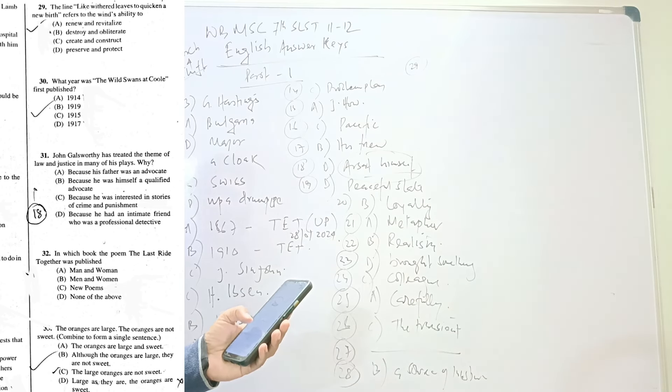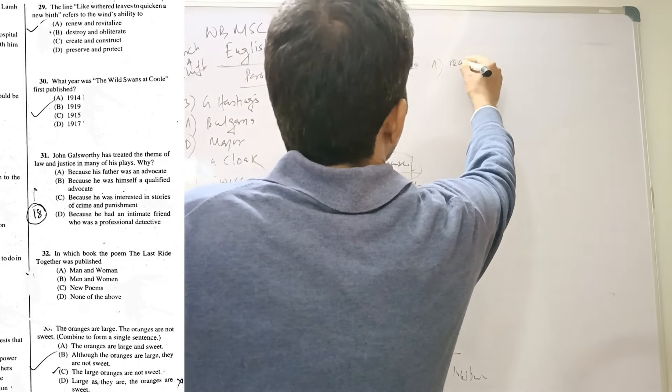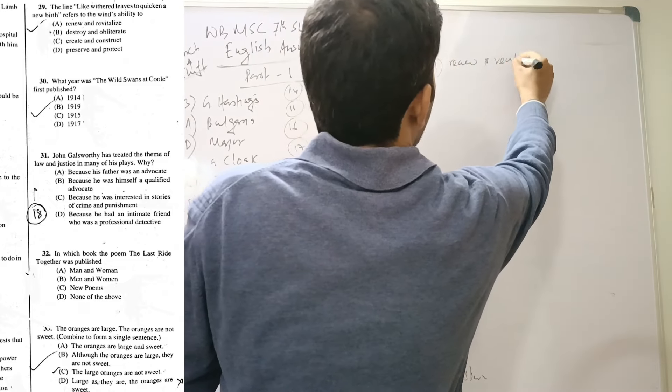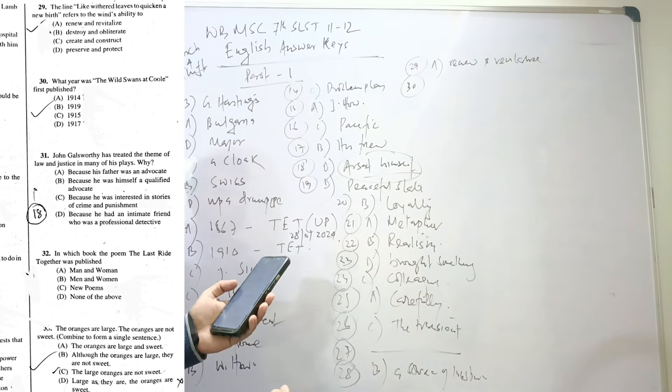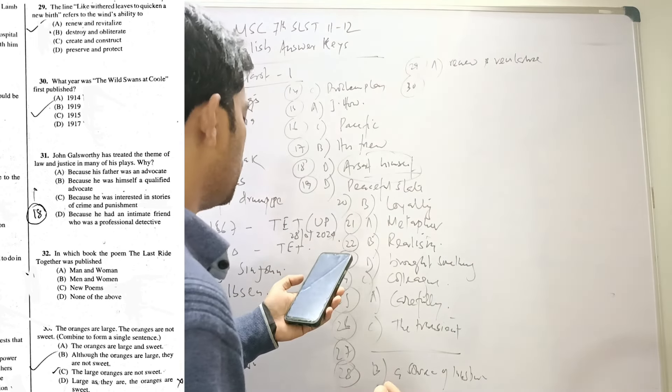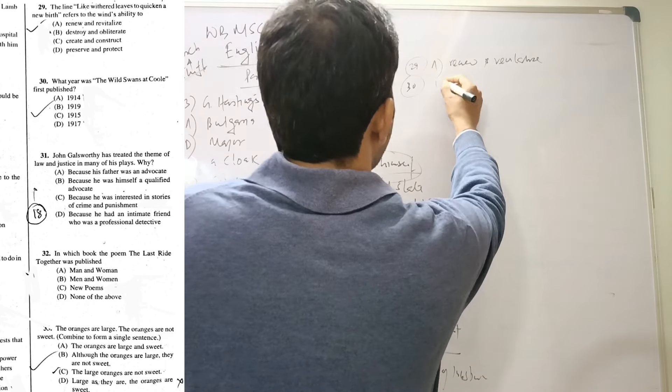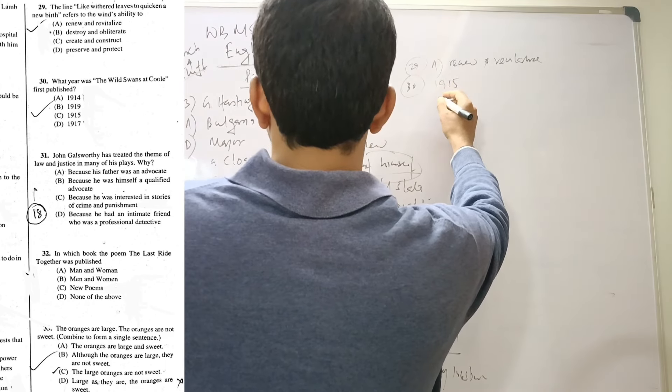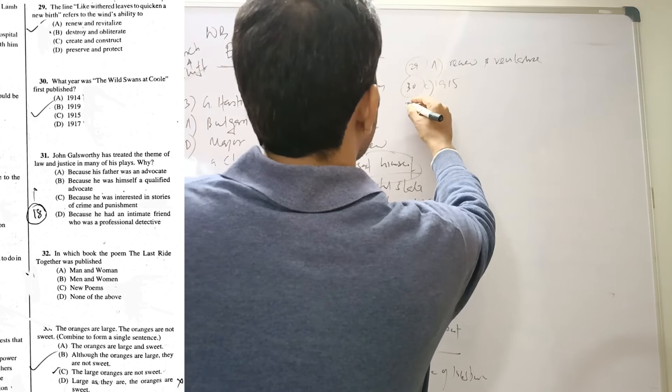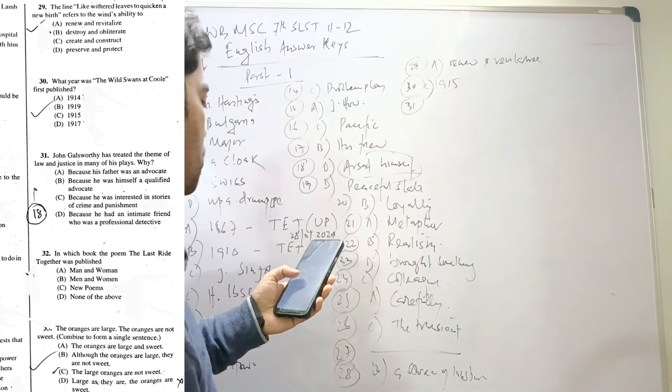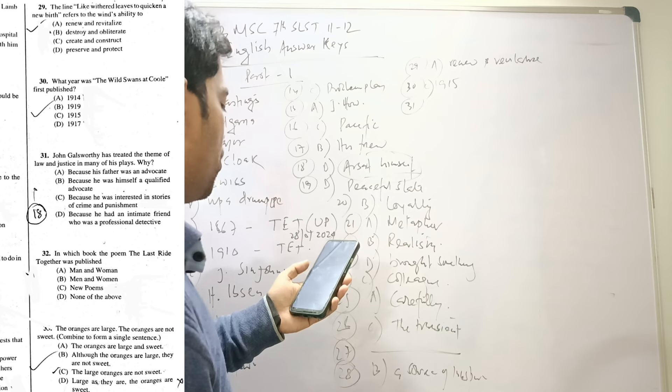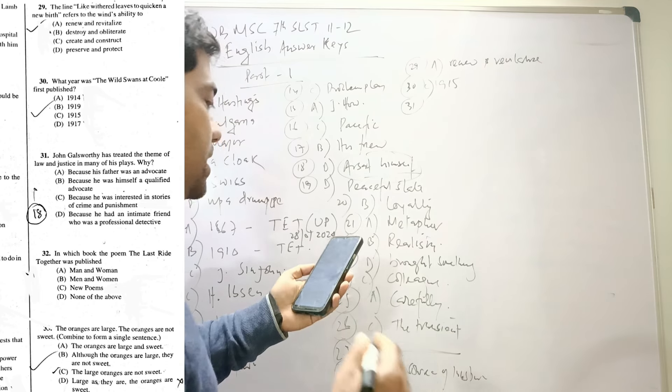Twenty-nine: The line 'like withered leaves to quicken a new birth' refers to the wind's ability to renew and revitalize. Thirty: What year was Ode to the West Wind first published? First it was published in 1815, then republished in 1916, C. Thirty-one: John Galsworthy has treated the theme of law and justice in many of his plays. Why? Because he had an intimate friend who was a professional detective. Thirty-two: In which book was 'The Last Time Together' published? Men and Women, B.